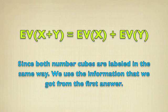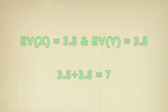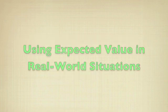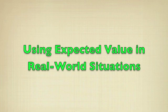Add them up. Now, since both number cubes are variable in the same way, that is 1 through 6, are always the same, we use the information that we got from the first answer. Okay? That is, we got the answer, which would be equal to 3.5, so EV of X would be 3.5, and EV of Y would be 3.5.